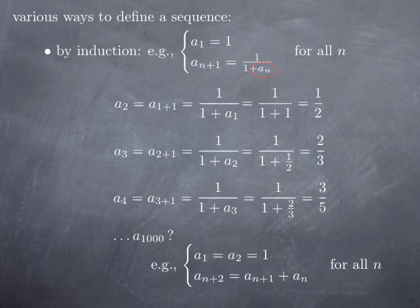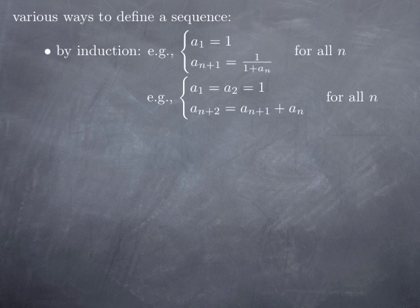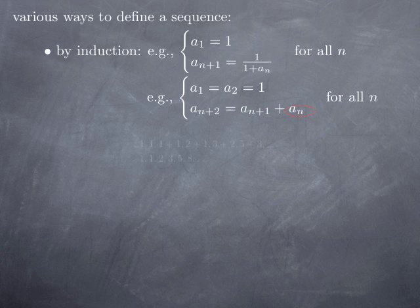Another example defined by the first two terms, with each subsequent term given in terms of the preceding two, is given here. The first two terms are both 1, and then a_{n+2} = aₙ + a_{n+1} — you add the two preceding terms to get the new one. This is the so-called Fibonacci numbers. So a₁ = 1, a₂ = 1, a₃ = 1+1 = 2, a₄ = 2+1 = 3, a₅ = 3+2 = 5, and so on.